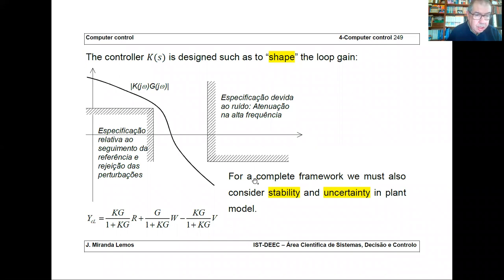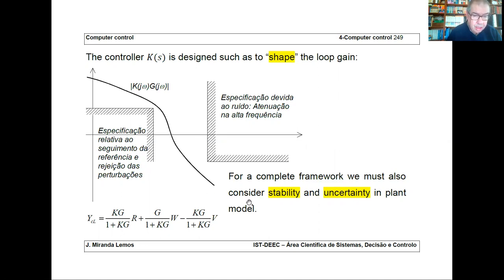Typically the game is to shape the loop gain — that is to say, to select the controller K such that the loop gain KG is something like this: in low frequency you have a high value of the loop gain, and in the high frequency you have a low value. Then you must be careful with two other things.